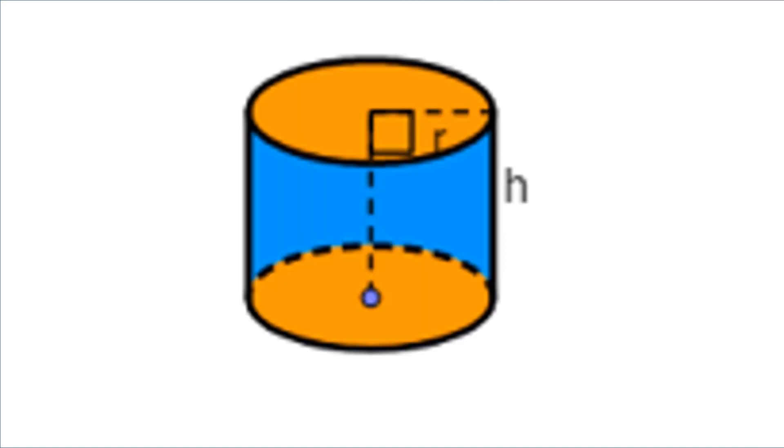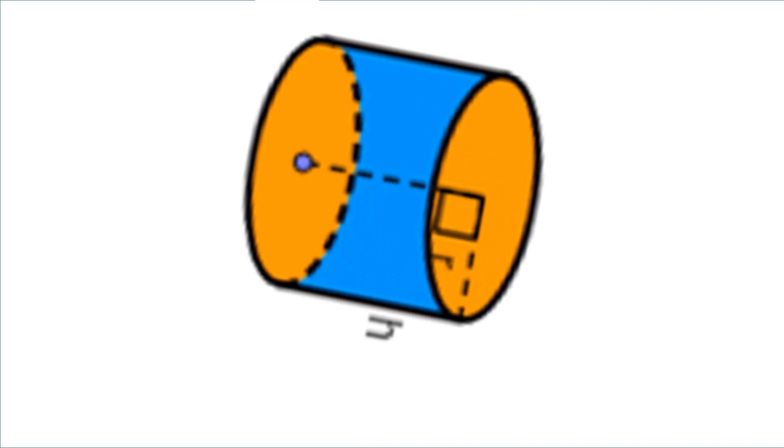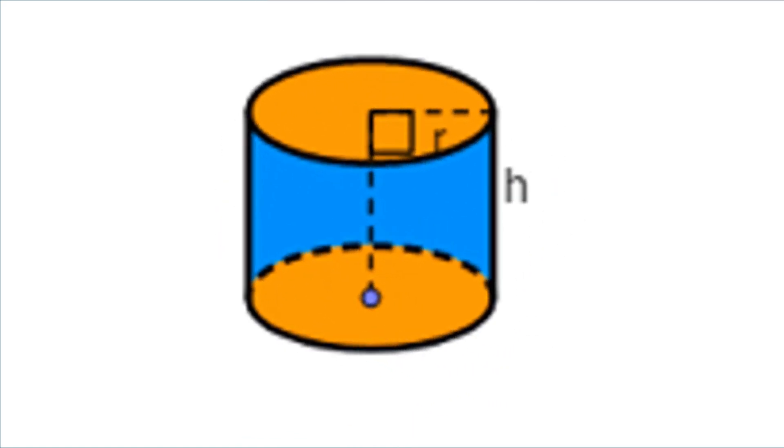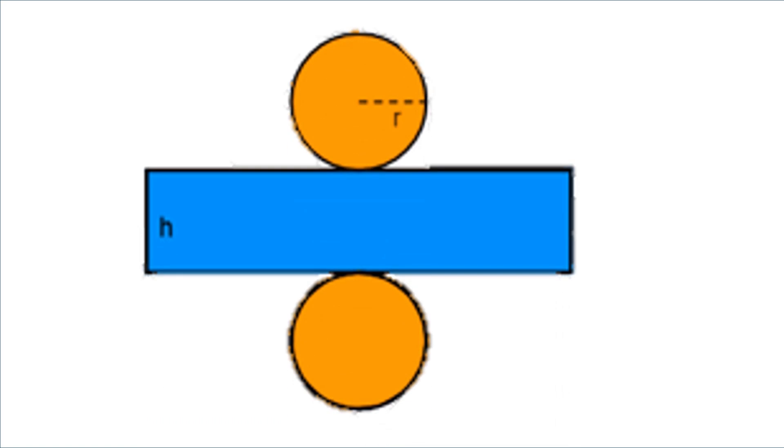What do we call this solid figure? All right, this is a cylinder. This is what a cylinder looks like if we open it. It has three flat faces, two circles and one rectangle.